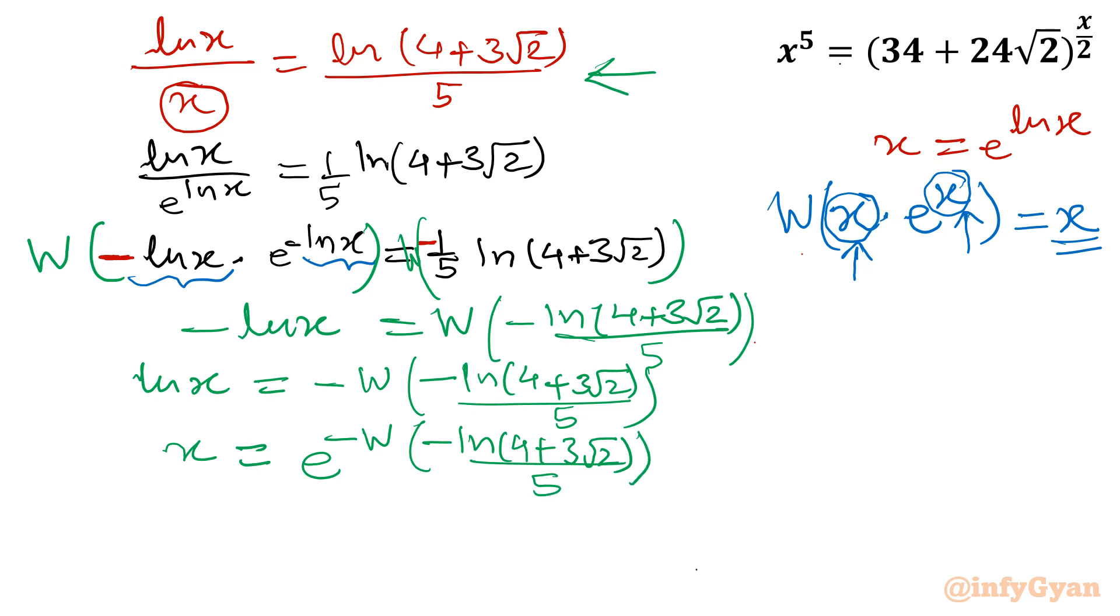Now if you will find out the value using Wolfram Alpha, then this value is coming out 2.1534 minus iota times or i times 1.2311. This is our one of the solution in complex form. So this is our solution.